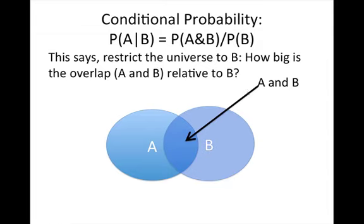So how are we going to do this? Well, it's just a matter of taking how big is this overlap area. The overlap area is the probability that A and B are both occurring. And then seeing how big that is relative to B. So that's why it's just the probability of A and B divided by the probability of B.